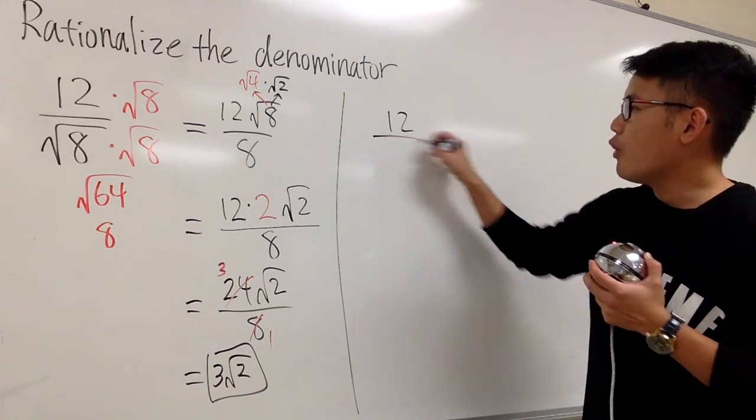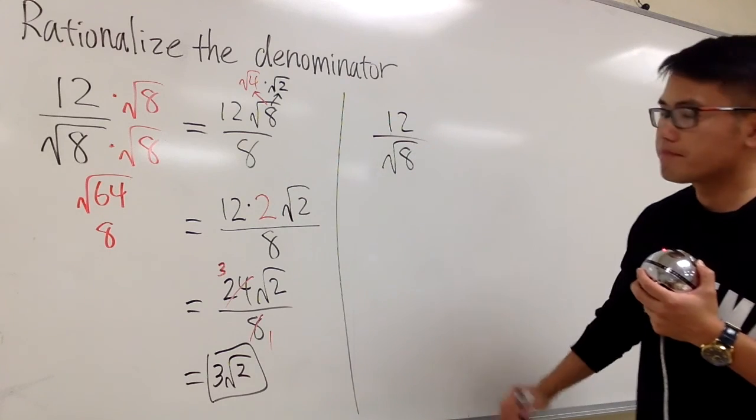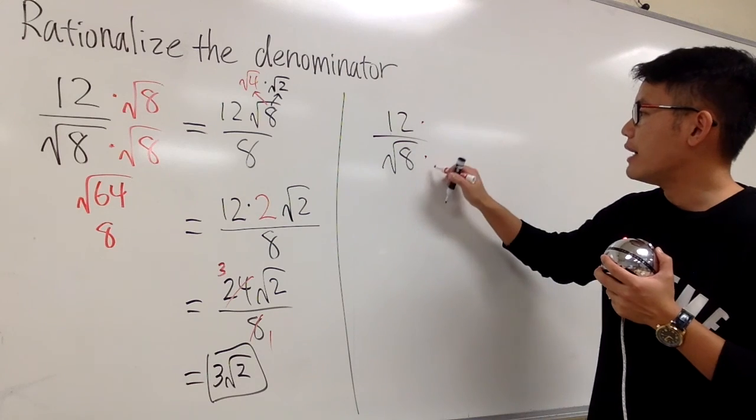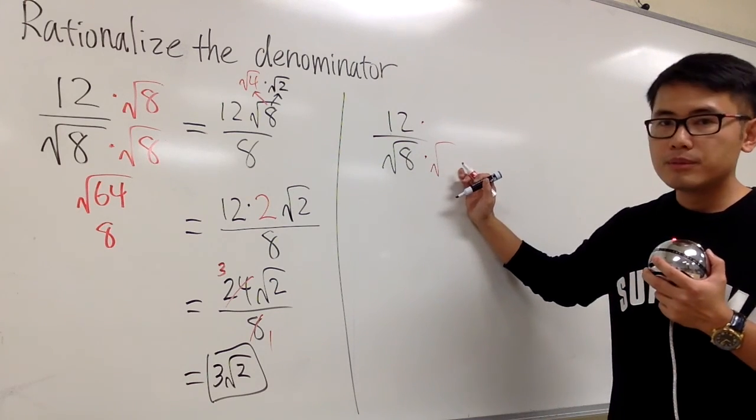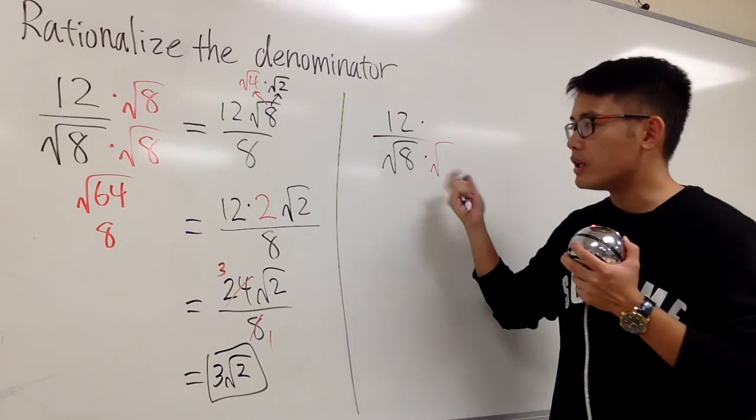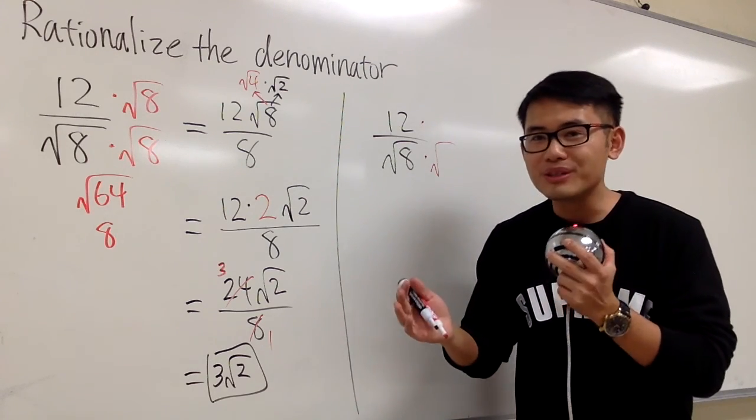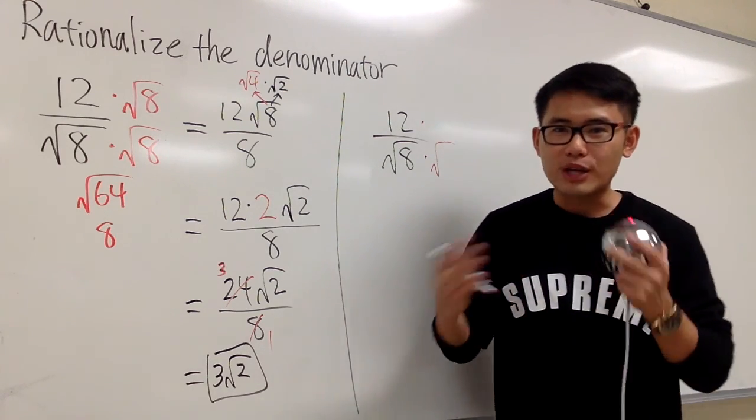Look at 12 over square root of 8. The idea here is that I need to multiply top and bottom by square root of some number so that I can produce a perfect square inside of a square root. Because that way, square root of a perfect square is a rational number.